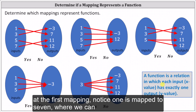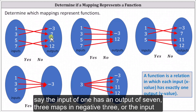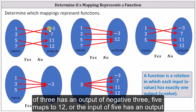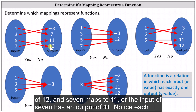Looking at the first mapping, notice one is mapped to seven — the input of one has an output of seven. Three maps to negative three, or the input of three has an output of negative three. Five maps to 12, or the input of five has an output of 12. And seven maps to 11, or the input of seven has an output of 11.